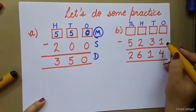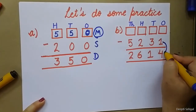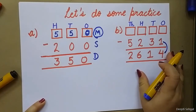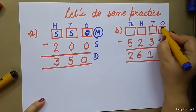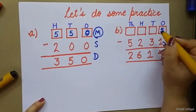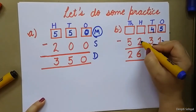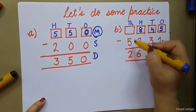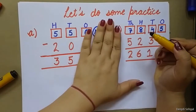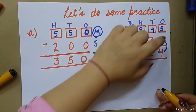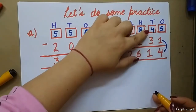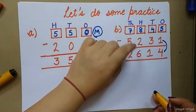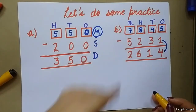Let's do the next question. Again, we have to find the minuend, so we will add. 1 added to 4 will give you 5, 3 added to 1 will give you 4, 2 added to 6 will give you 8, and 5 added to 2 will give you 7. So this is my minuend. You can check the answer: 5 minus 1 is 4, 4 minus 3 is 1, 8 minus 2 is 6, and 7 minus 5 is 2. Simple.